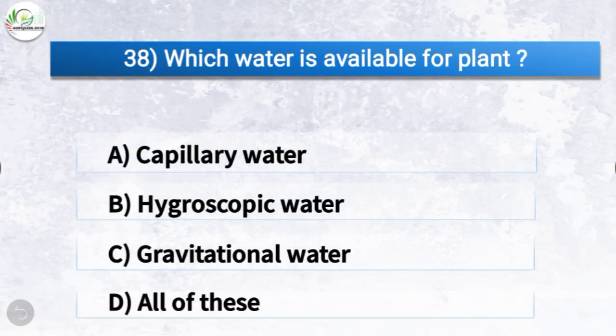Question number thirty-eight: which water is available for plants? The options are capillary water, hygroscopic water, gravitational water, or all of these. The correct answer is option A, capillary water. So capillary water is available for plants.